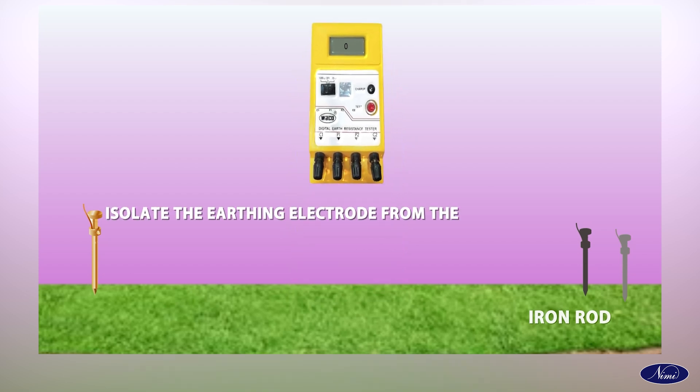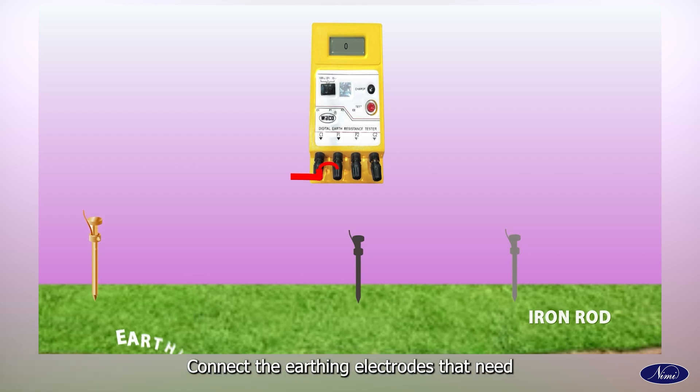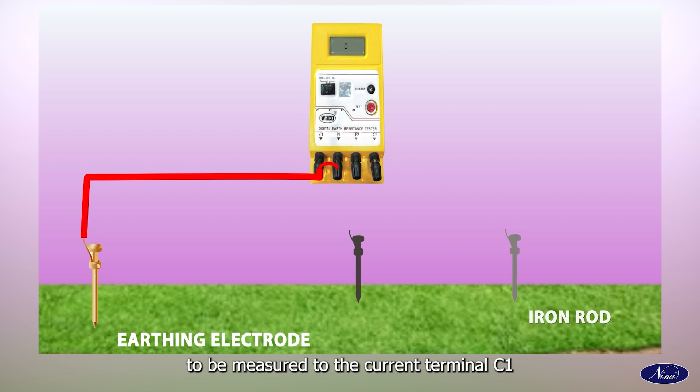Isolate the earthing electrode from the electrical system in which resistance has to be measured. Make a short between the terminals P1 and C1 with a jumper wire on the earth tester. Connect the earthing electrode that needs to be measured to the current terminal C1. Connect the other two rods with P2 and C2 terminals using insulated wires.